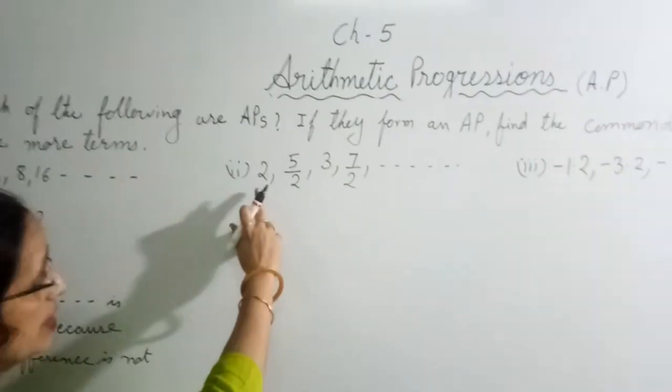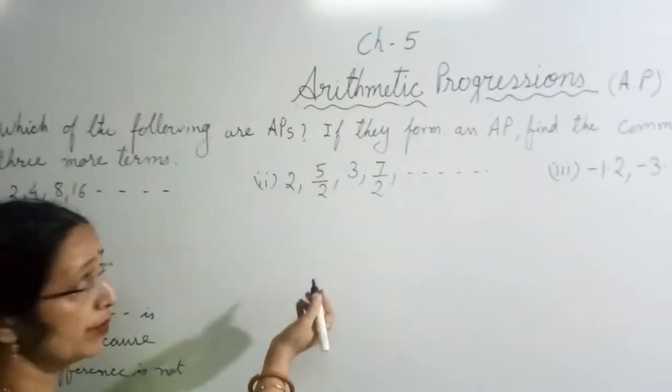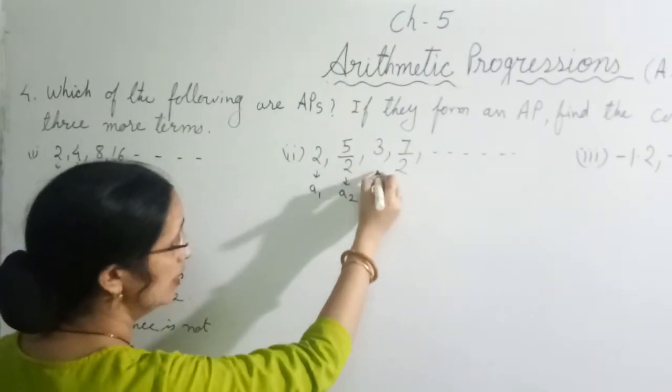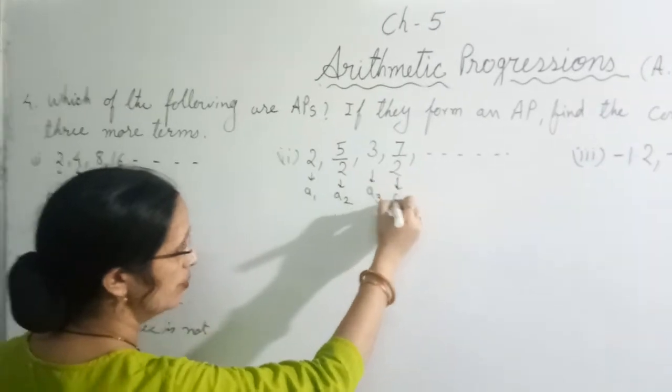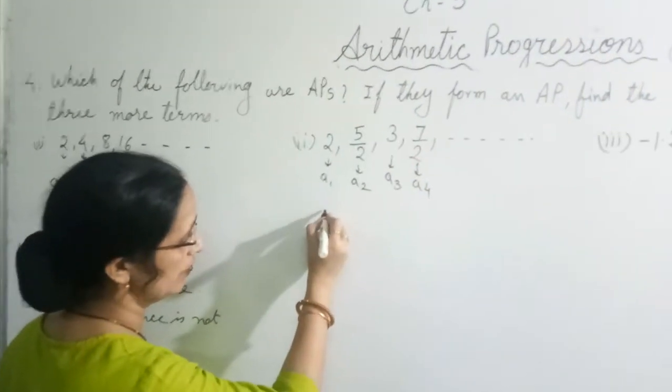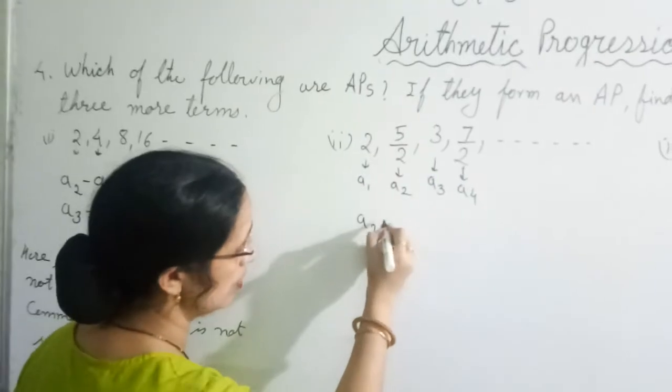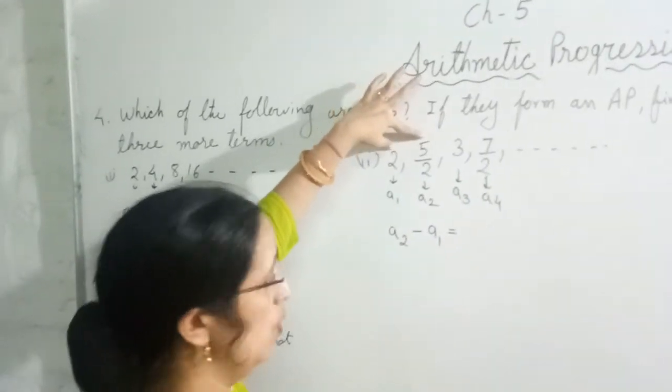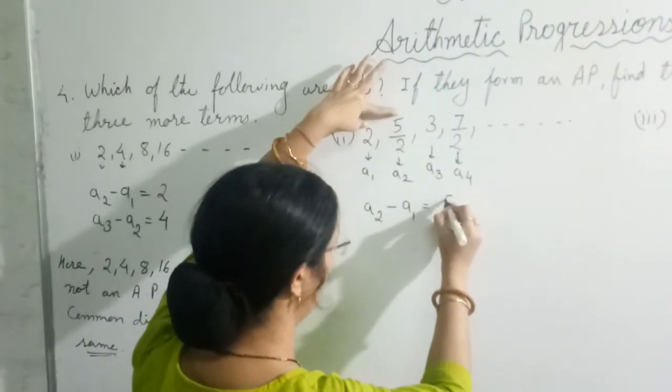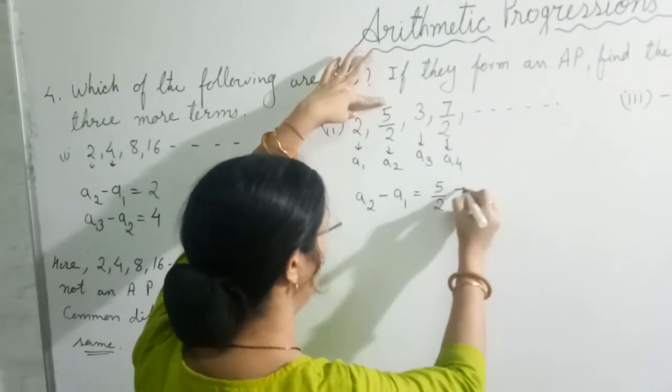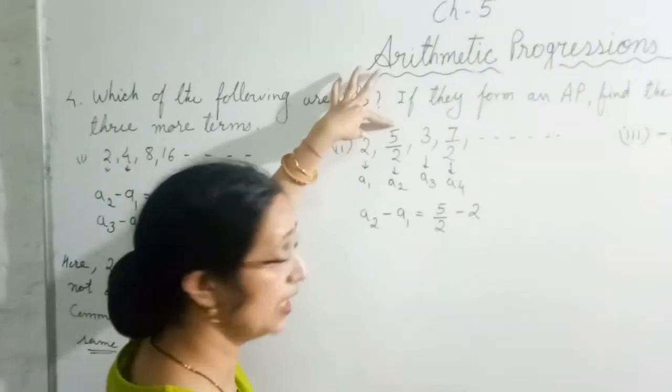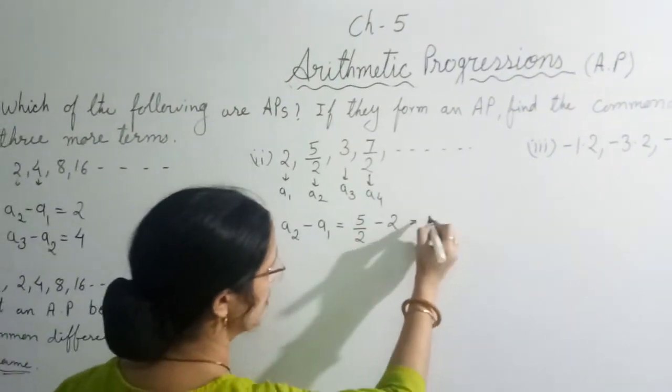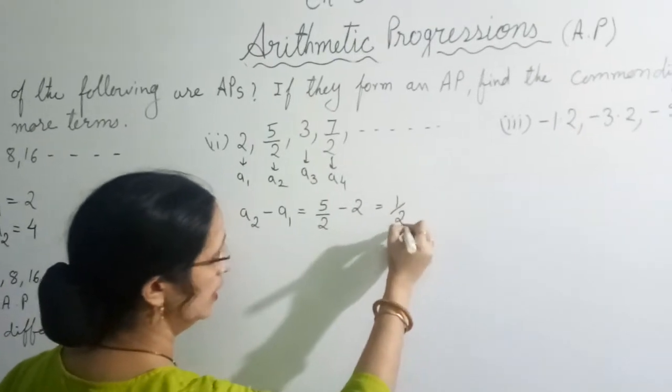Now let us come to the second part. Again they have given, we have to find whether it is an AP or not. Again you know this is A1, this is A2, this is A3 and this will be A4. So first A2 minus A1 means 5 by 2 minus 2. Now if you have difficulty doing orally then write and do. So you have to take LCM, it will become 4 minus 5, it will be 1 by 2.